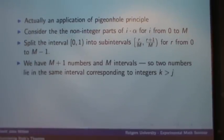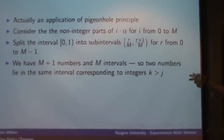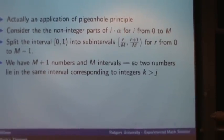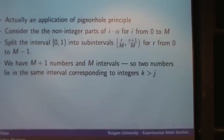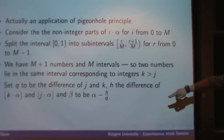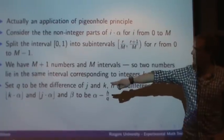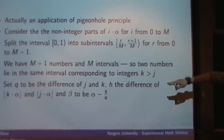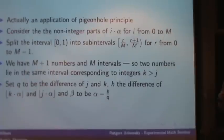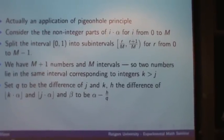And because of the pigeonhole principle, we have m plus 1 numbers, m intervals, so there must be two numbers that lie in the same interval. And we just say that those numbers correspond to the integers k and j. It's then actually pretty simple. We just set q, which is our denominator of our fraction, to be the difference of these two numbers. We set h to be the difference of the floor of k times alpha and the floor of j times alpha, and we set beta to be the remainder. And it's fairly simple to check that these satisfy the conditions that we require.